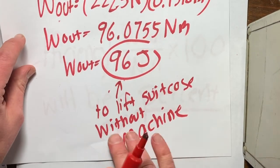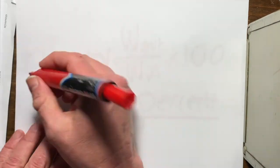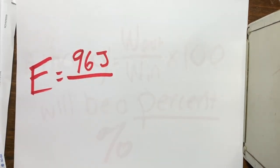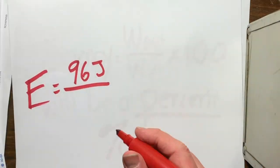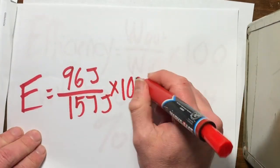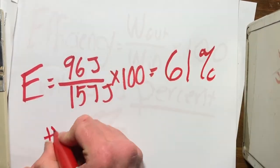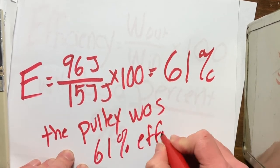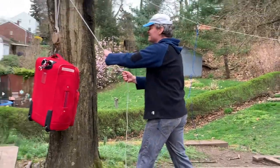Now for the pulley, I'm still lifting 50 pounds 17 inches, so it was the same work out of 96 joules. But my work in was 157 joules when I use the pulley. So I take 96 divided by 157 times 100, and I get an efficiency of 61%. So again, about 40% of the energy wasted. My back feels great, it's so easy!